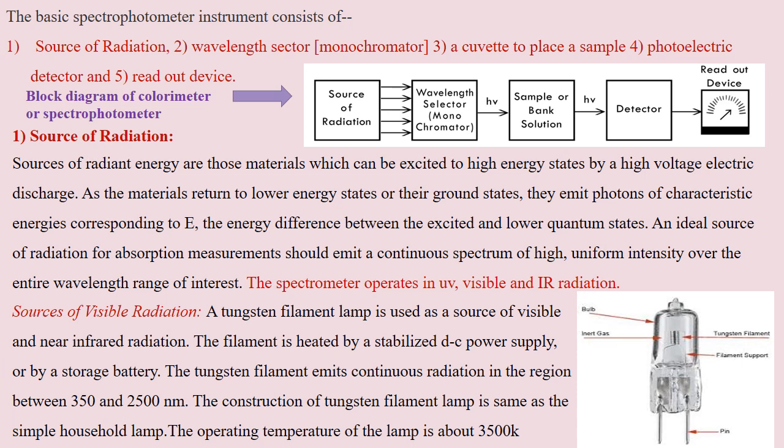The spectrometer generally operates in three regions: UV, visible, and IR radiation. The visible region is most important for analytical purposes. The source of visible radiation is generally a tungsten filament lamp. This filament is heated by a stabilized DC power supply, and it generally emits radiation between 350 to 2500 nanometers. Its operating temperature is about 3500 Kelvin.